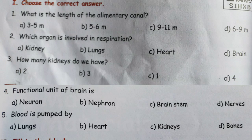Number 5: Blood is pumped by — A: lungs, B: heart, C: kidneys, D: bones. Blood is pumped by — very good — Option B: heart. Okay children, please check your answers.